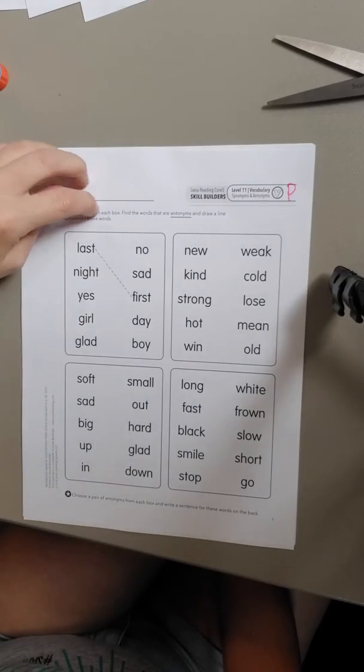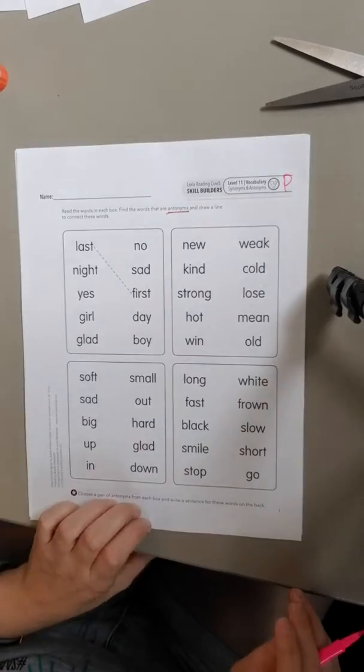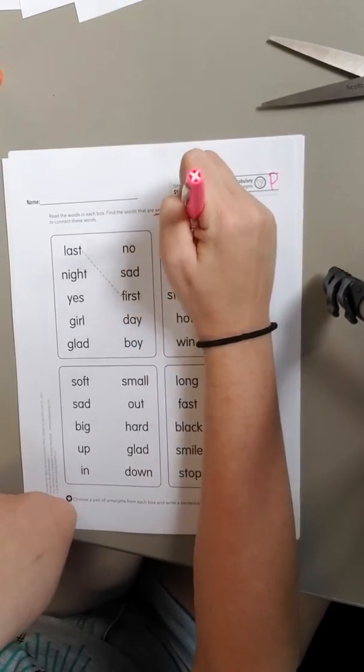The instructions say, read these words in each box. Find the words that are antonyms and draw a line to connect these words. Remember, antonyms are opposites. So I'm going to write a little note out here to myself, opposites.